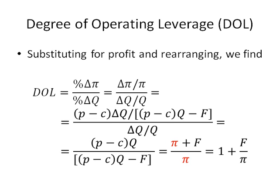As profits become very large, you can think as this denominator pi gets very big relative to F, then this second term in this fraction, F over pi, is going to get very small, meaning my degree of operating leverage is going to approach 1.